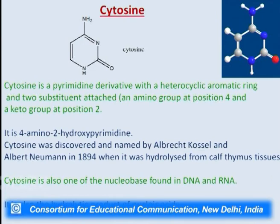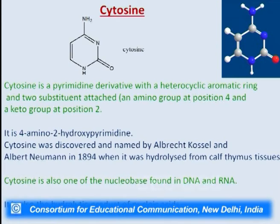The next important nucleobase is cytosine. Cytosine is a pyrimidine derivative with a heterocyclic aromatic ring and two substituents: an amino group at position 4 and a keto group at position 2. It is 4-amino-2-hydroxypyrimidine (taking the enol form of the keto group). Cytosine was discovered and named by Albert Kossel and Albert Neumann in 1894 when it was first hydrolyzed from calf thymus tissues. Cytosine is one of the nucleobases found in both DNA and RNA and is also a hydrolytic product of nucleic acids.